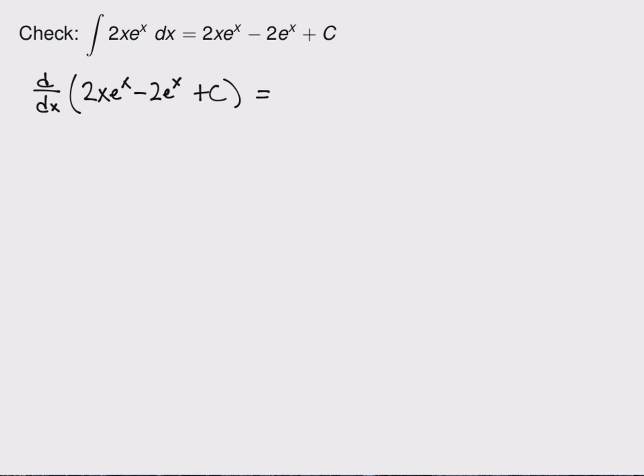This happens a lot because integration by parts is the product rule done backwards. So for the product rule, that first part is the derivative of the first part times the second plus the first part times the derivative of the second. Now I get to the minus 2 e to the x whose derivative is minus 2 e to the x. And the constant becomes a zero. These two parts cancel nicely. And I'm left with just 2x e to the x, which is my original integrand. So this is a check that I have an antiderivative.